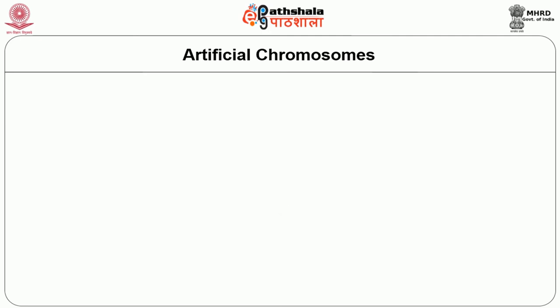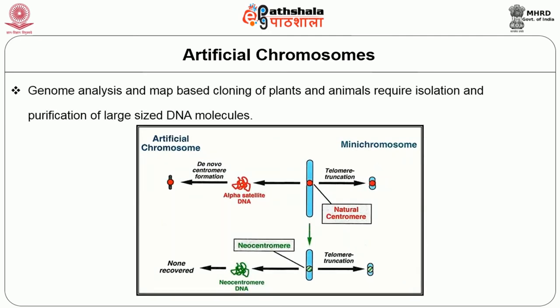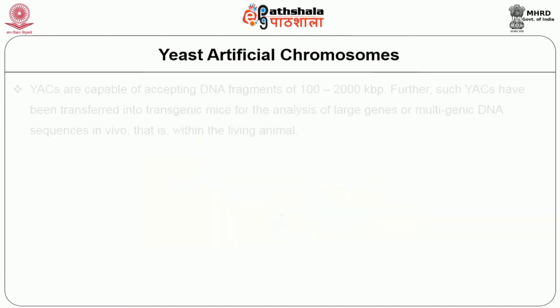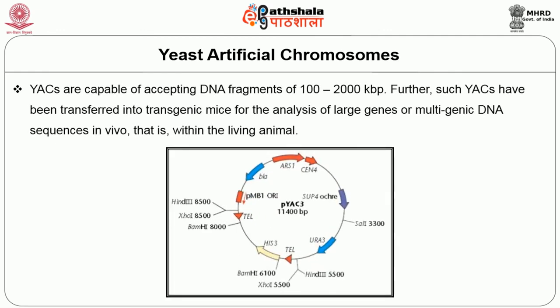Artificial chromosomes: genomic analysis and map-based cloning of plants and animals require isolation and purification of large-sized DNA molecules. Coming to yeast artificial chromosomes, or YAC: they are capable of accepting DNA fragments of 100 to 2000 kbp. Such YACs have been transferred into transgenic mice for the analysis of large genes or multigenic DNA sequences in vivo — that is, within the living animal.